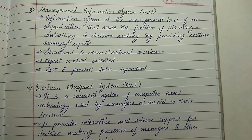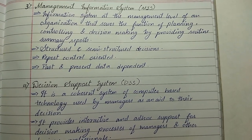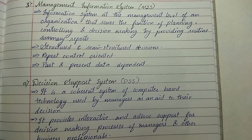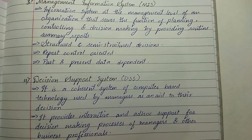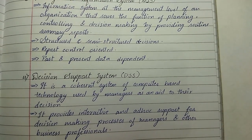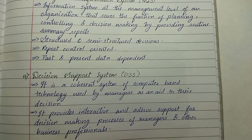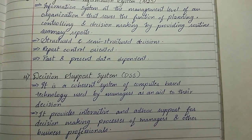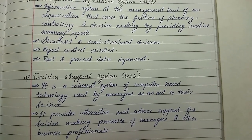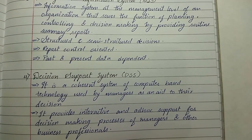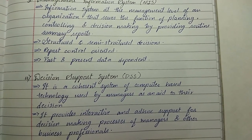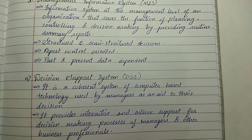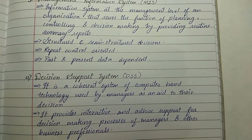The fourth is the Decision Support System (DSS). It is a coherent system of computer-based technology used by managers as an aid to their decision making. It provides interactive and ad hoc support for the decision making processes of managers and other business professionals.